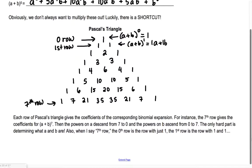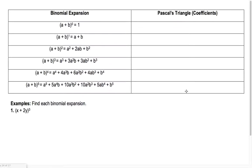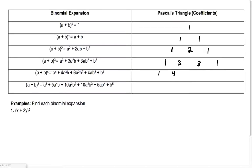So (a + b)⁰ = 1, Pascal row is just 1. (a + b)¹ = a + b, so that's 1, 1 in Pascal's Triangle — 1a + 1b. (a + b)² = a² + 2ab + b², that's 1, 2, 1. (a + b)³ = 1, 3, 3, 1. (a + b)⁴: 1, 4, 6, 4, 1. And the last one we found was 1, 5, 10, 10, 5, 1 for (a + b)⁵.